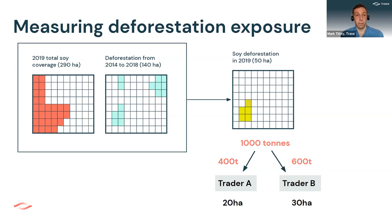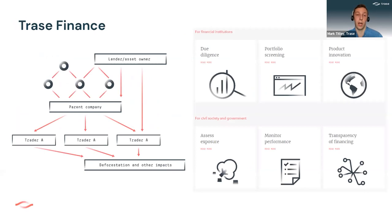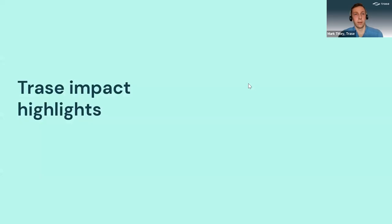That's a summary of our methods. I'll also briefly mention TRACE finance, which builds on that data and connects it to parent companies of those traders, and the financing of those companies, to understand how the finance sector might be exposed to deforestation. If you're interested in the finance aspect of this, do check out our TRACE finance website, where there are lots more resources and other ways you can explore our data.